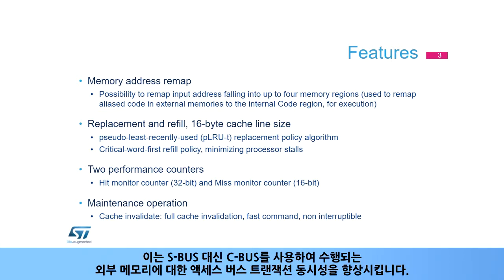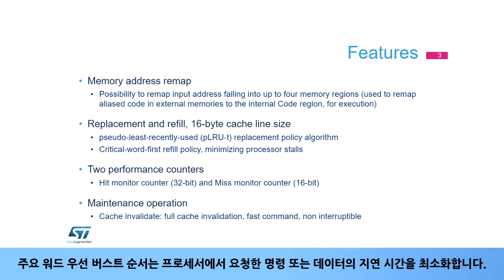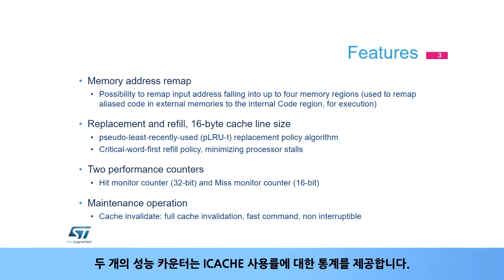This improves bus transaction concurrency as accesses to external memories are performed using the C bus instead of the S bus. The cache line size is 16 bytes. The replacement algorithm is pseudo-least recently used, based on a binary tree, and critical word first-burst ordering minimizes the latency of the instruction or data requested by the processor. Two performance counters provide statistics about the utilization of the iCache.